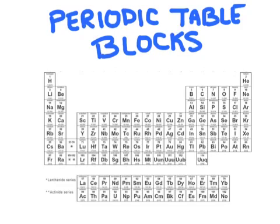Something you may have noticed about the periodic table is that it's separated into different columns, and these columns are actually groups or families that are related to one another. One way that they're related is that each of the columns has their highest energy electron in the same sublevel. Let me show you what I mean.